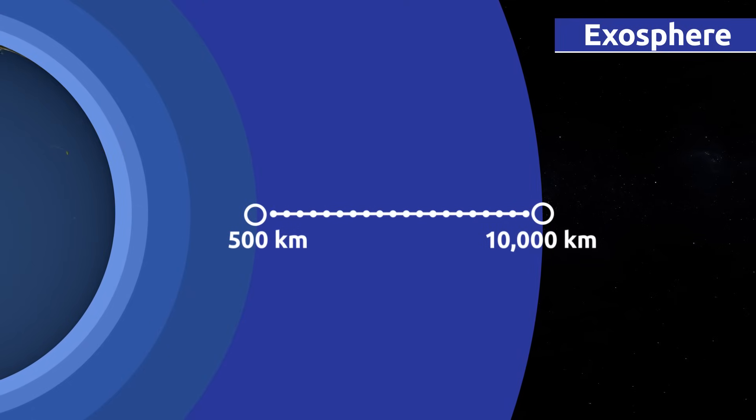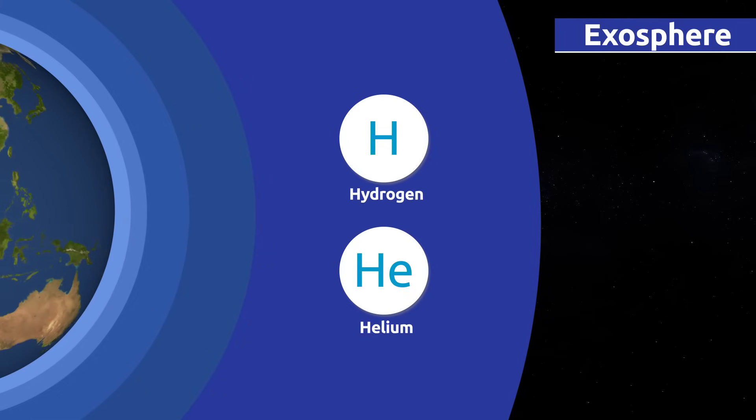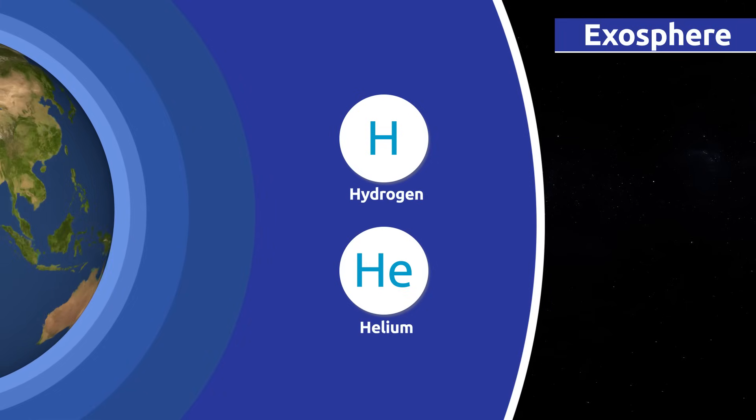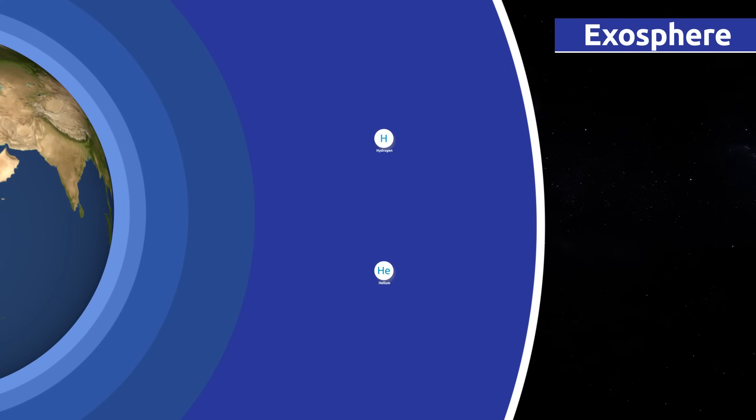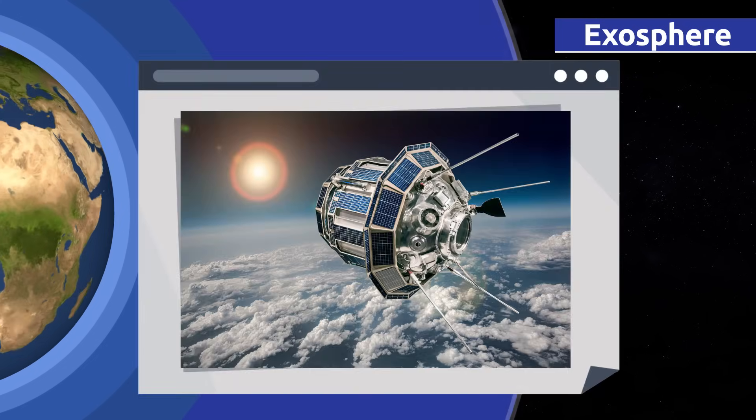It extends to an altitude of approximately 500 to 10,000 kilometers above sea level. Air in the exosphere is very thin. There's nothing but hydrogen and helium there. This layer is our outermost limit with space and protects us from solar flares. Satellites orbit the earth within the exosphere.